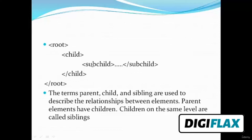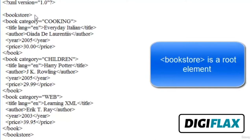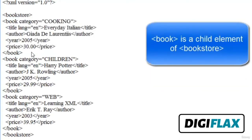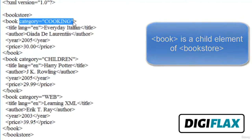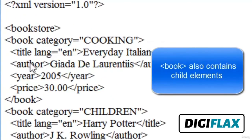In the previous tutorial, we created 'note' as the root node and 'to', 'from', 'heading', and 'body' as child nodes. The terms parent, child, and sibling are used to describe relationships between elements. Parent elements have children; children on the same level are called siblings. For example, in the Bookstore XML document, 'bookstore' is the root element and 'book' is the child element. The 'book' element contains various categories specified as attributes.